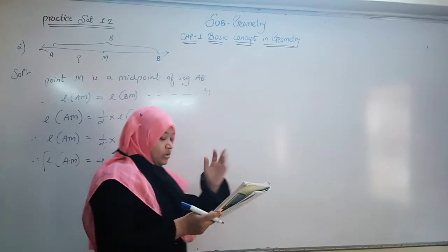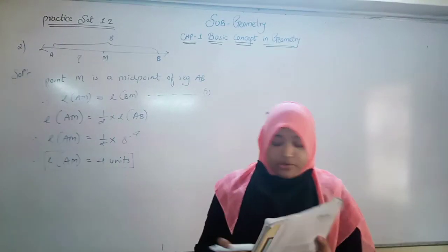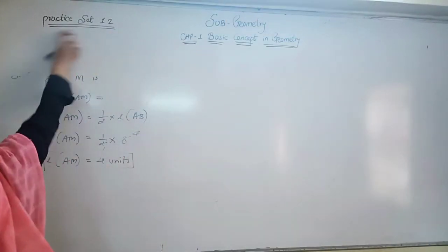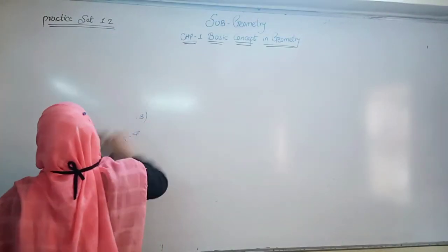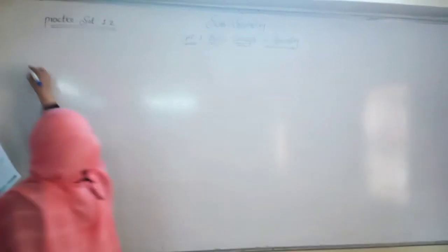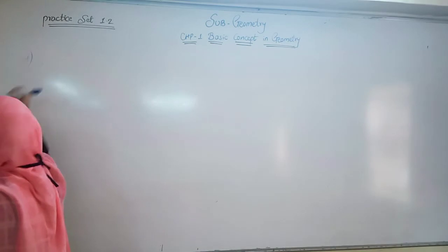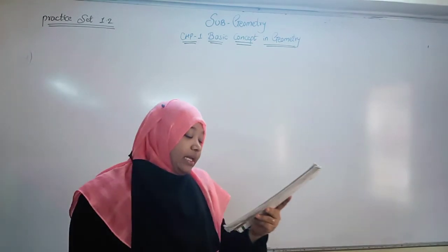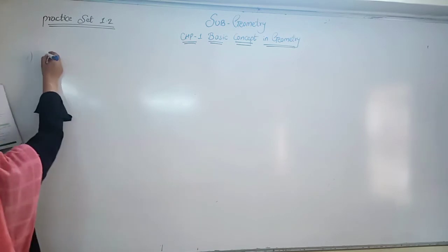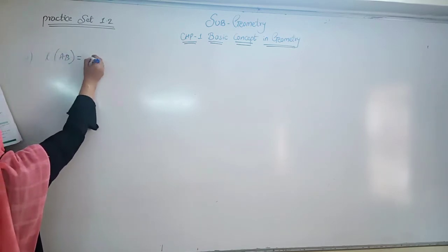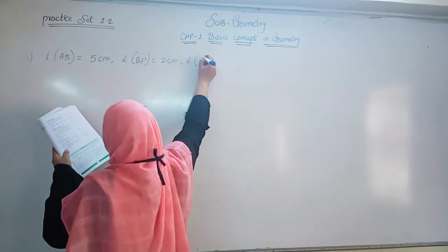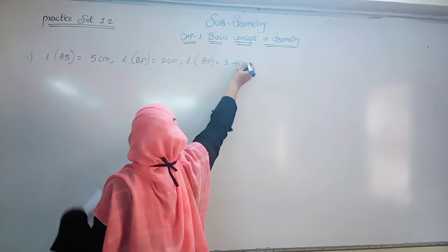In the same question we have a third part — you can do that as an assignment. I am going to explain Question number 4. See what is given: if AB is 5, BP is 2, and AP is 3.4, compare the segments. So: length of AB equals 5, length of BP equals 2 centimetres, and length of AP equals 3.4 centimetres.